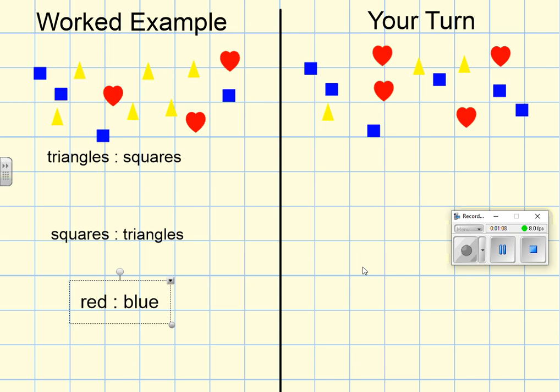In this worked example, we've got a collection of shapes of different colors, and we're going to write the ratio of a few of the different properties we can see. The first one I've been asked to do is to look at the ratio of triangles to squares, so the first thing I need to do is spot all the triangles I can see.